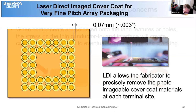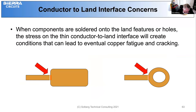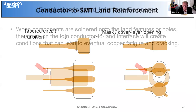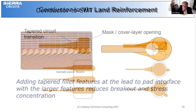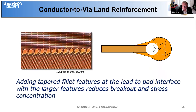As far as conductor to land: when components are soldered onto the land features, we have to think about the stress at that joint. We want to taper that entrance so that the stress is minimized. If you have a through hole or a small via, a teardrop also contributes to strengthening that product as well as accommodating misalignment when the hole goes through — preventing breakout.